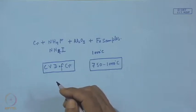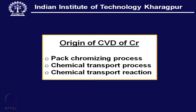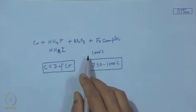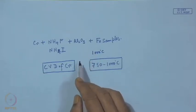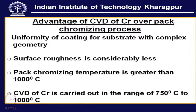This chromizing process is actually a chemical transport process and a chemical transport reaction — the material is transported onto the surface of the substrate where the necessary reaction takes place, releasing chromium vapor which condenses in the form of a solid film. The uniformity advantage is very important when the geometry of the substrate is complex in nature.